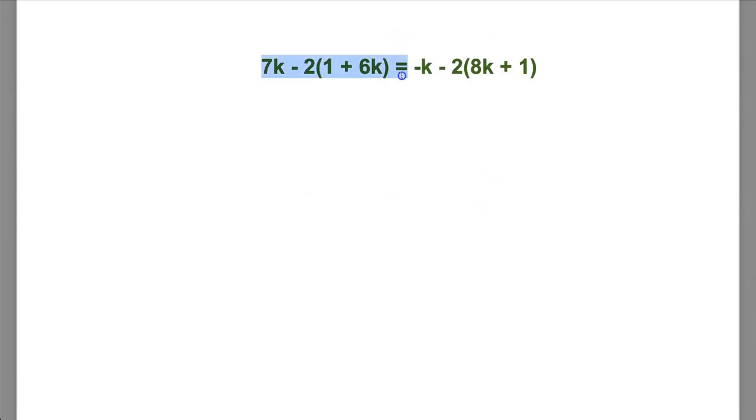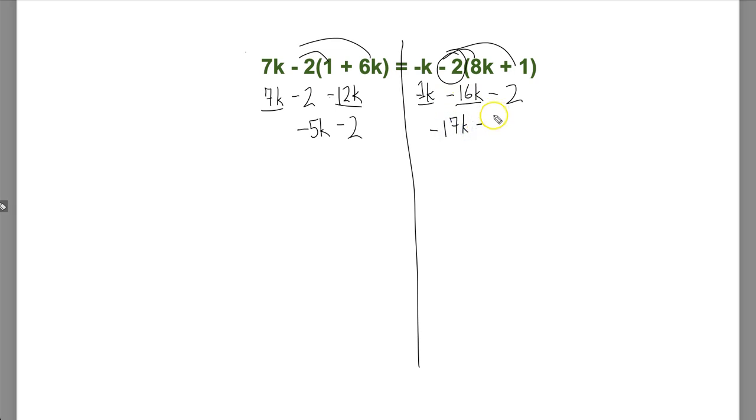This last one is slightly tricky, not only because it's just a lot. There's just a lot of pieces. So I need to do all my distributive properties first. So 7k, my negative 2 times negative 1 is negative 2. Negative 2 times plus 6 or positive 6 is negative 12k. And then bring this down. Distribute the whole thing. Negative 2 times 8 is minus 16k. Negative 2 times positive 1 is minus 2. So I'm going to combine like terms now. 7 minus 12 is negative 5. And I'll bring down my minus 2. Negative 1 minus 16 is negative 17k minus 2.